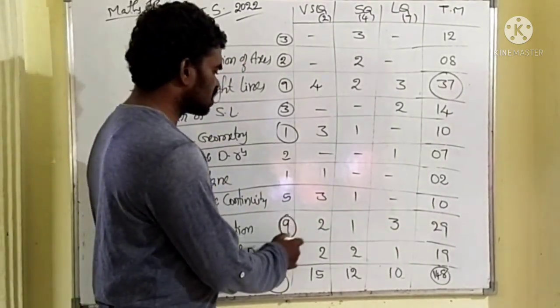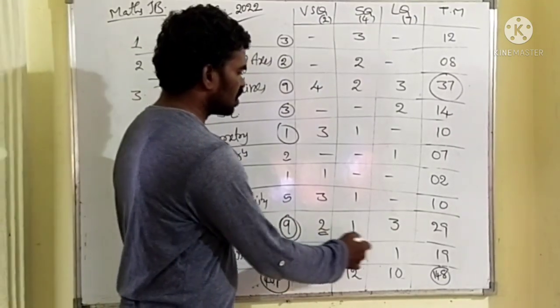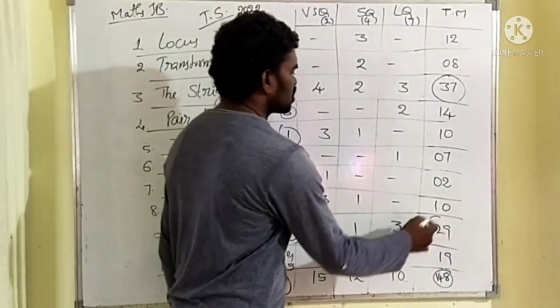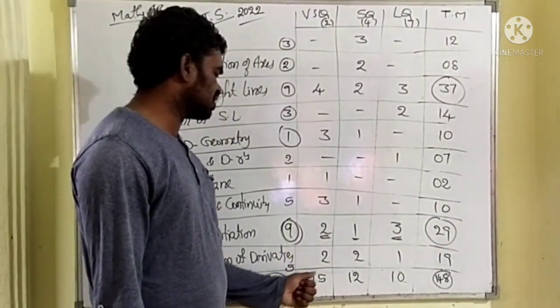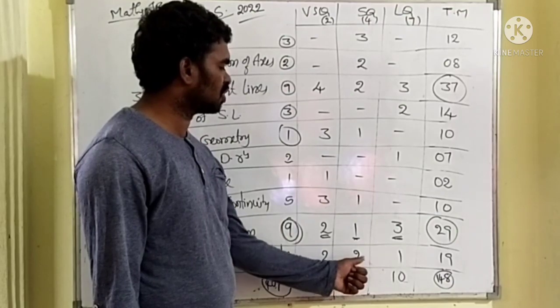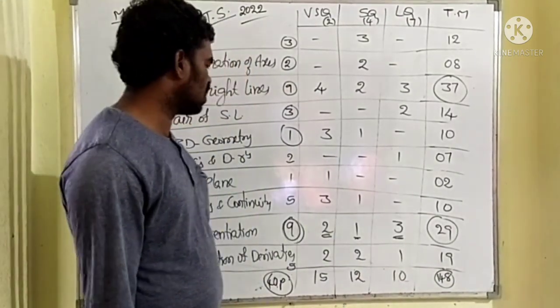Differentiation - this is 9 parts, 2 very short questions, 1 four marks question, 3 seven marks questions and 29 marks. These also contain large number of marks. And applications of derivatives, 2 very short questions, 2 four marks, 1 long question completely, 19 marks.